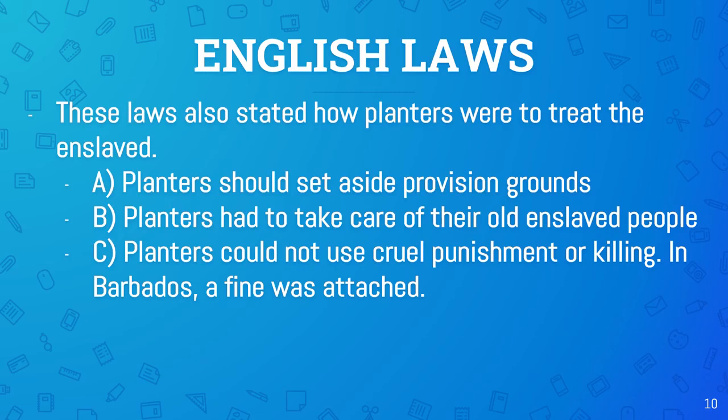That concludes our lesson on slave laws. We've identified the types of slave punishments, explained why the slave laws were enacted, and compared the three types of laws. I want you to think: were the slave laws humane? Were they done in the interest of the enslaved person, or in the interest of the planters? Your assignment will be posted on Google Classroom.